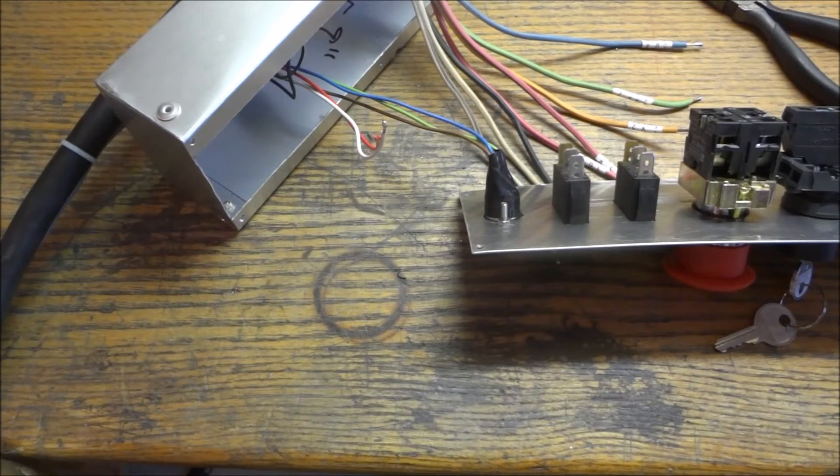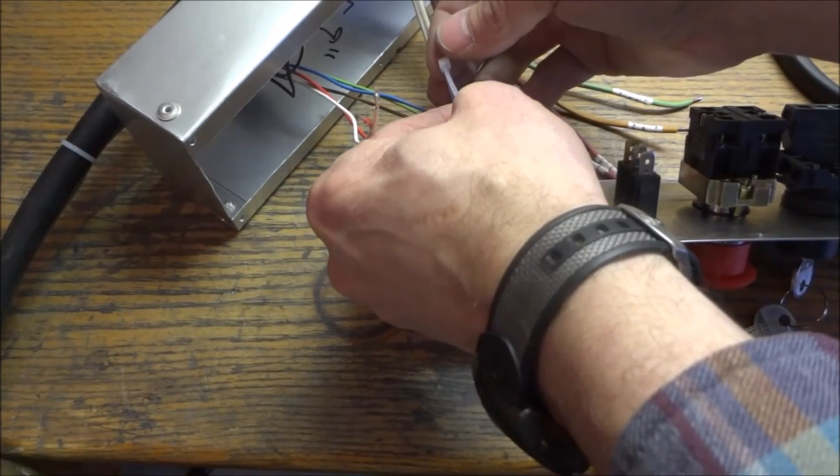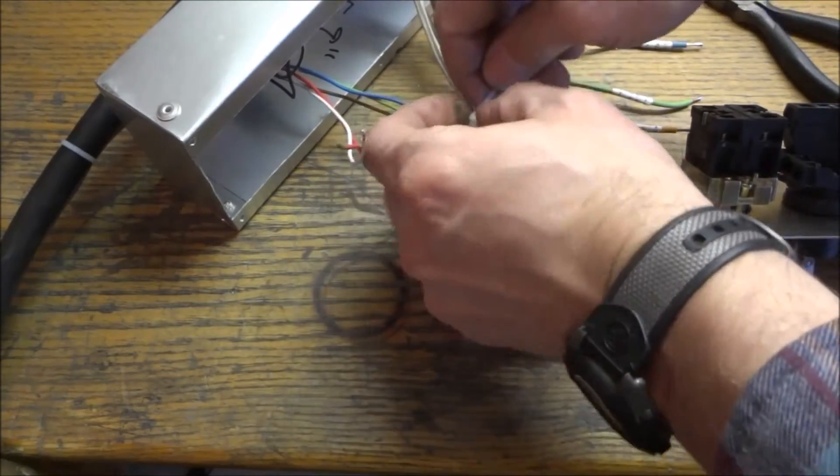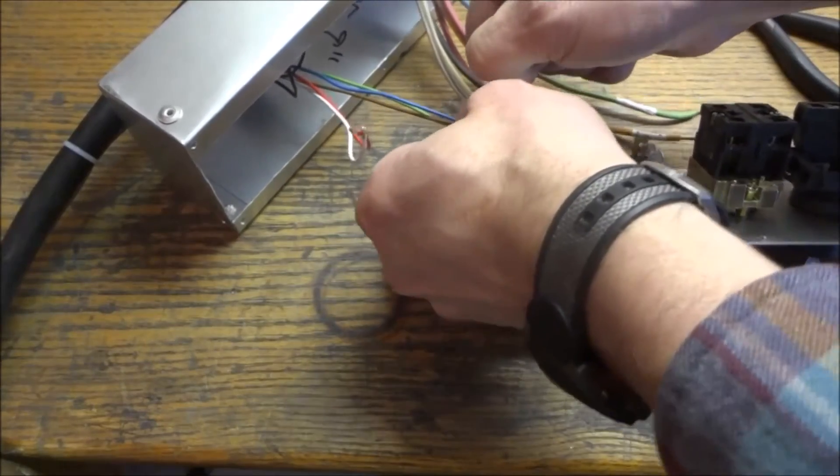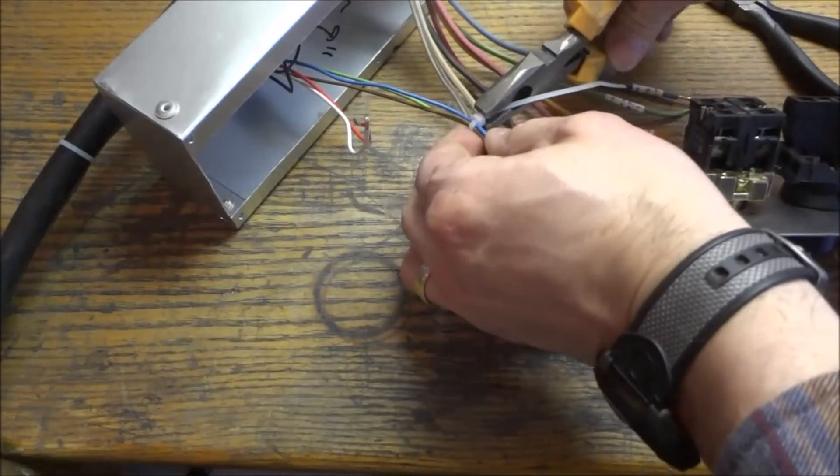These are going to be for touch probe or any other accessory later on down the road. So I just want to make sure that nothing touches, nothing shorts out, messes up my breakout board. I'm just going to put one right here on these wire ties just to keep these together.